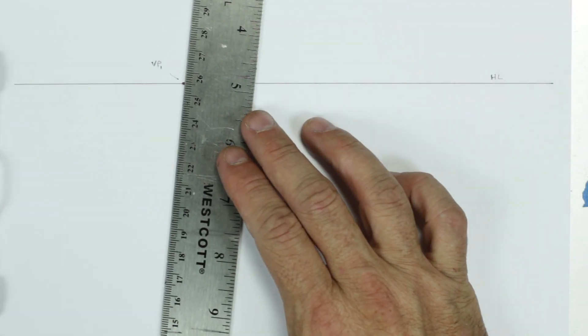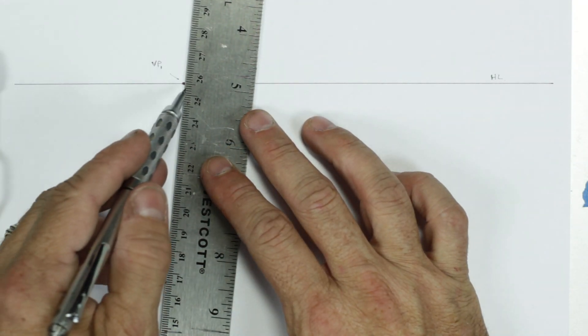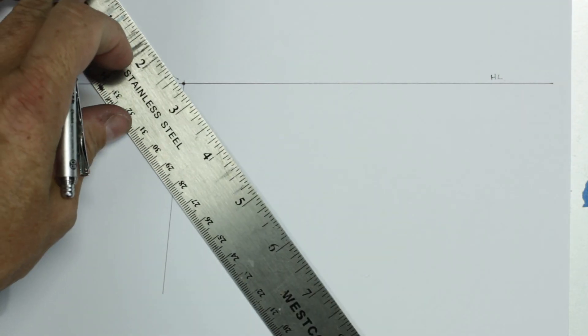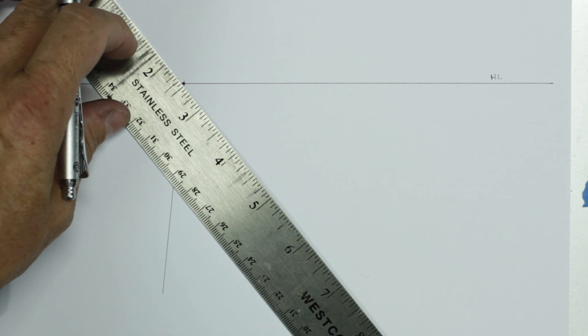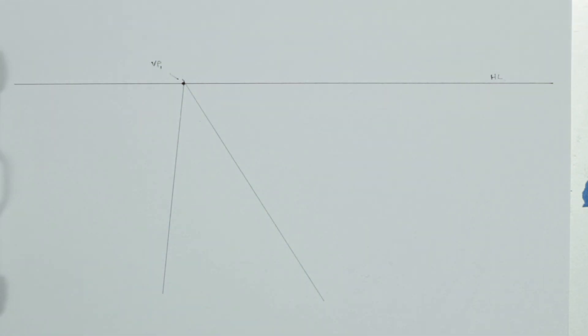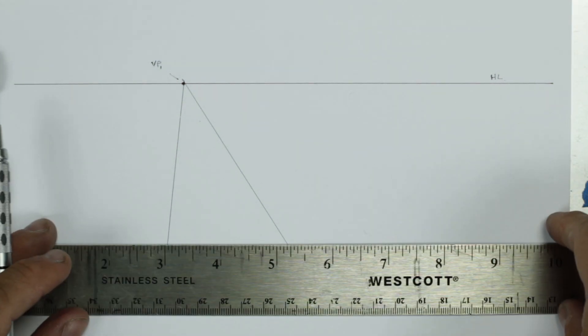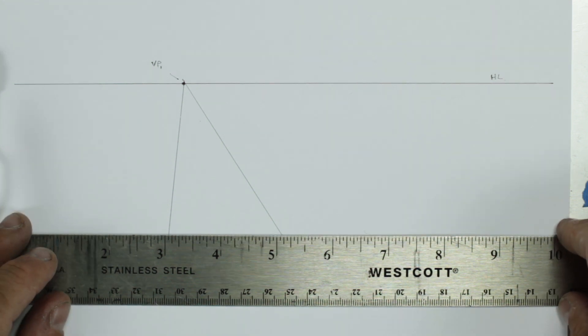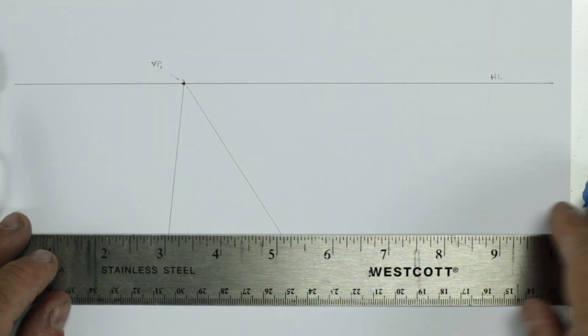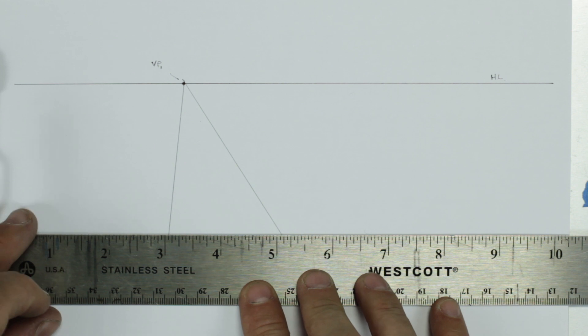And then I'm going to draw two lines coming from the vanishing point that represent parallel lines going back into space and doing what's called converging. Next, I'm going to draw another horizontal line running parallel, or close to parallel, hopefully parallel with our horizon line.